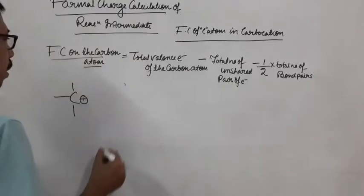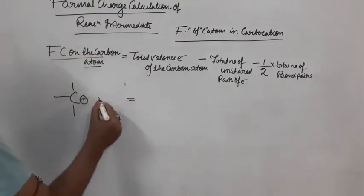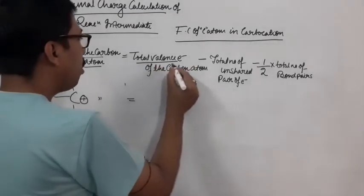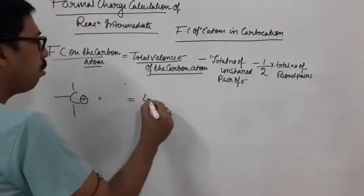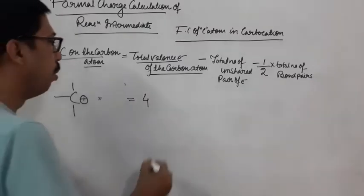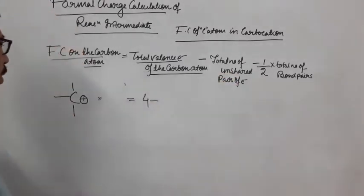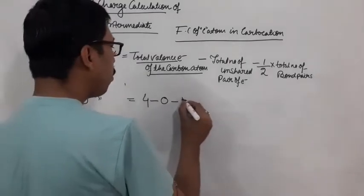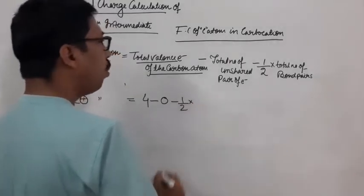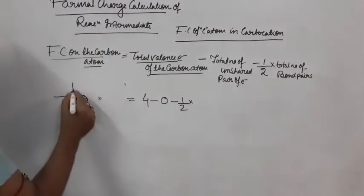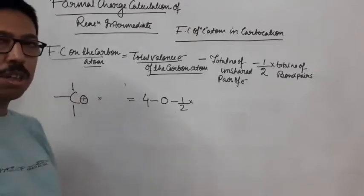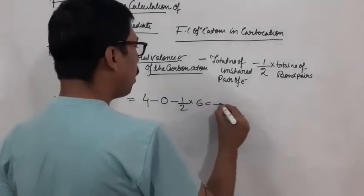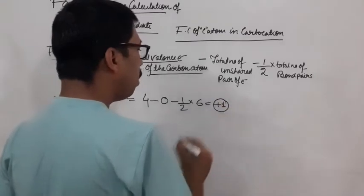So first, here same carbon. Total valence electron of the carbon minus total number of unshared pair of electrons. Here unshared pair of electron is zero, minus one by two into total number of bond pairs, one two three, six electrons. Now plus one unit charge.